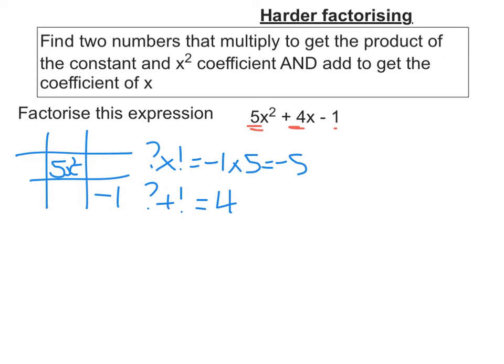So numbers that times to get negative 5: you can have negative 5 and 1, and you can have negative 1 and 5. Let's see what they add to. This is going to be negative 4 and this is going to be 4. So it's this pair here.